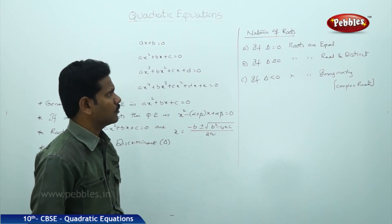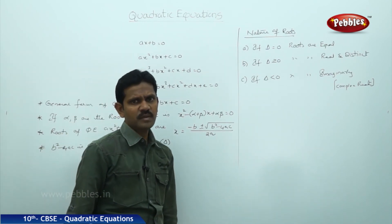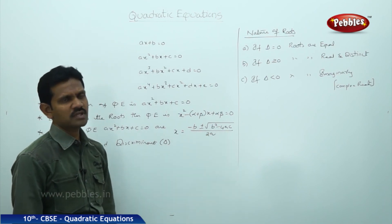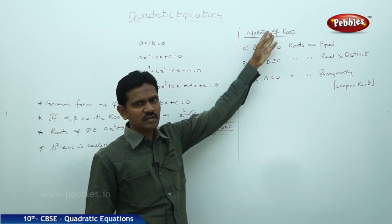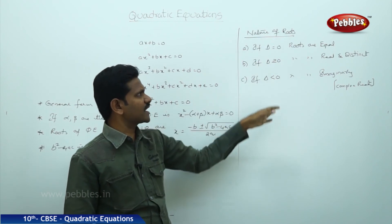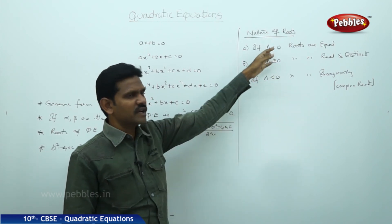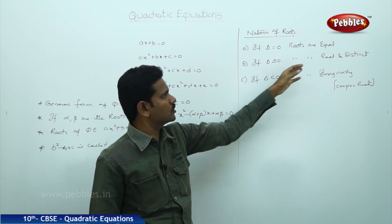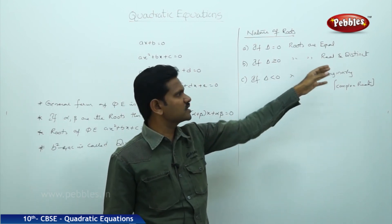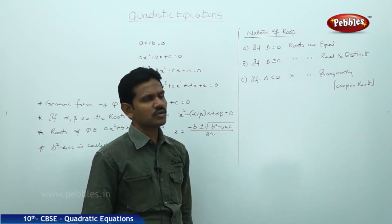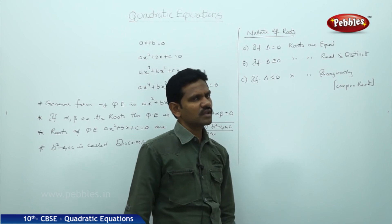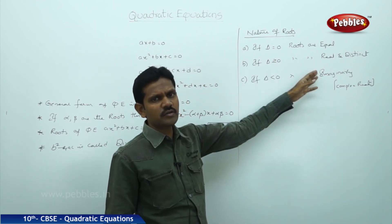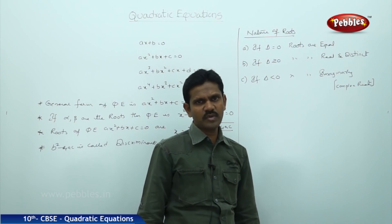What we understand in this section is: based on the value of B squared minus 4AC, we can decide the nature of the roots. The nature of roots are of three types. If delta equals 0, the roots are equal. If delta is greater than 0, roots are real and distinct. If delta is less than 0, the roots are imaginary, which leads to complex numbers.